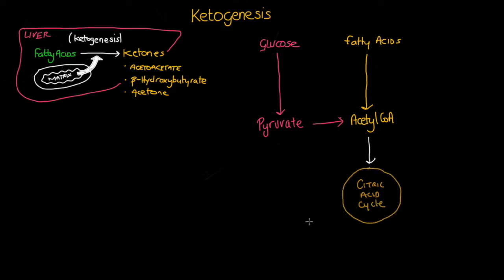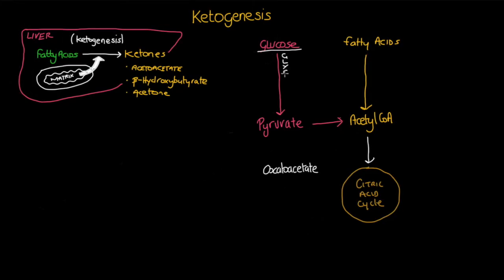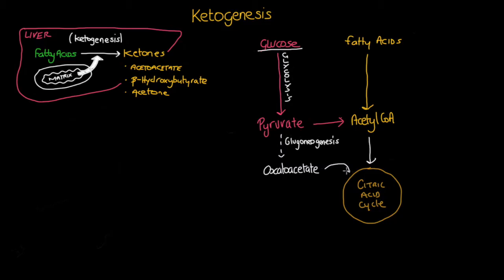The fate of acetyl-CoA is dependent on the availability of a very important substrate called oxaloacetate, which in turn is dependent on carbohydrate supply. When glucose is available to cells, it can be metabolized into pyruvate by glycolysis, and some of this pyruvate can be converted into oxaloacetate by gluconeogenesis within the liver. This gives the citric acid cycle an ample supply of oxaloacetate, allowing it to process acetyl-CoA formed from other metabolic pathways, such as the beta-oxidation of fatty acids.